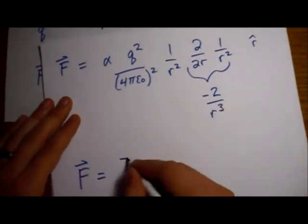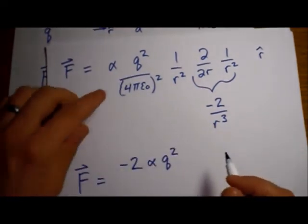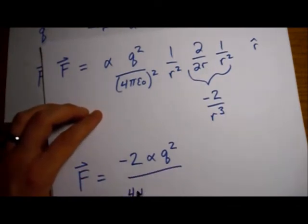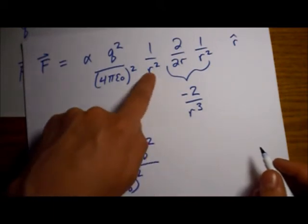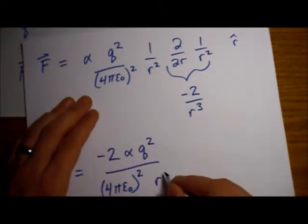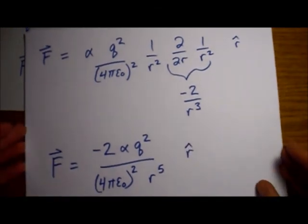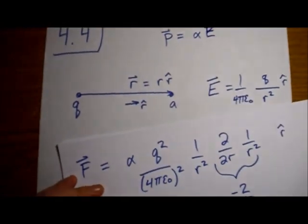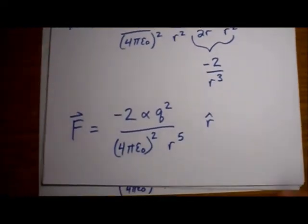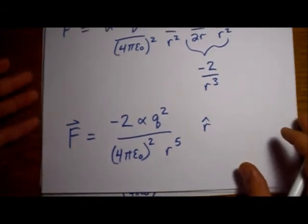We have a minus 2 from right here, we have an alpha, we have a q squared from right here, we have our 4πε₀ all to the power 2, and then we have our r cubed and an r squared, so we have an r to the fifth power. And this is all in the r hat direction. Now notice there's a minus sign. R hat points this way, so minus r hat will be pointing the other way. So this is indeed a force of attraction, and it goes as 1 over r to the fifth power. So it drops off very quickly.